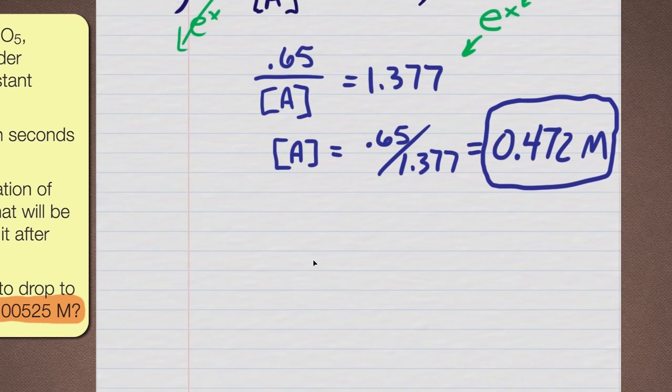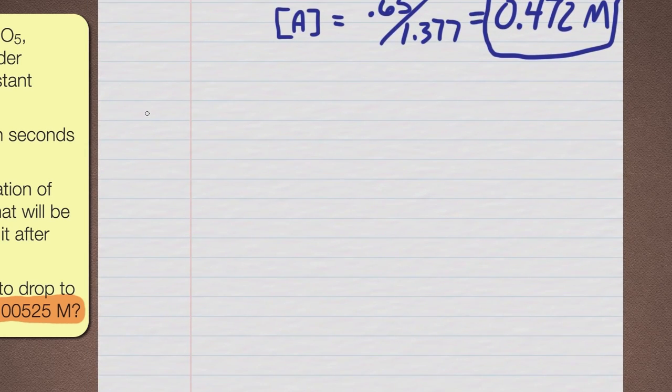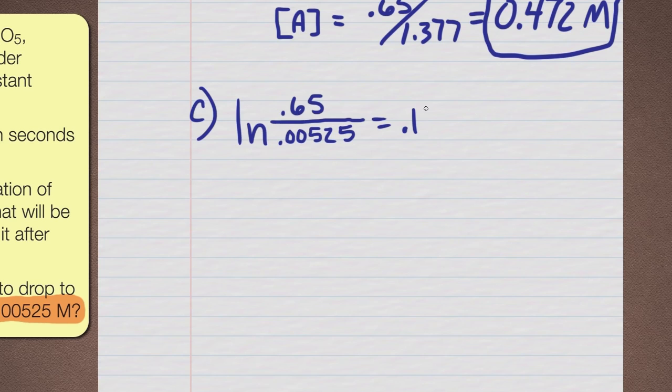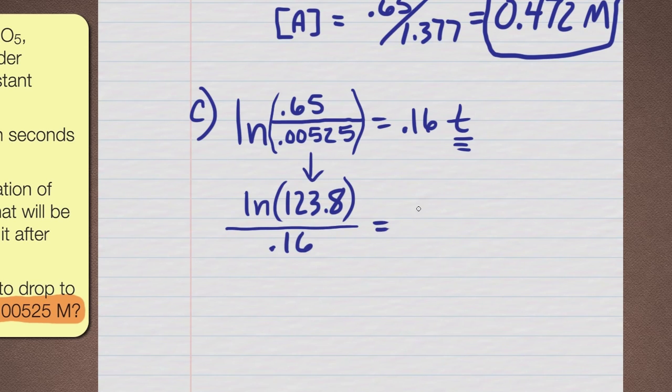Finally, the last question, and we'll be done, is the following. Part C is we're going to write the same rate law in, put 0.65. But this time we actually have a final concentration. That's our target. We're going to see how long it takes to get down to this value, 0.00525. And we're trying to solve for T. So if you put this in your calculator, you can get that number, and that number comes out to be 123.8. We're going to take the natural log of that number. Then we're going to divide it by 0.16, and that's going to equal our time.